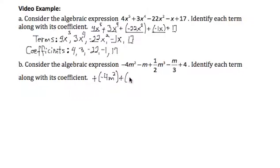So this becomes plus negative 1m, plus 1 half m cubed, plus, now watch how I write this one, negative 1 third m,